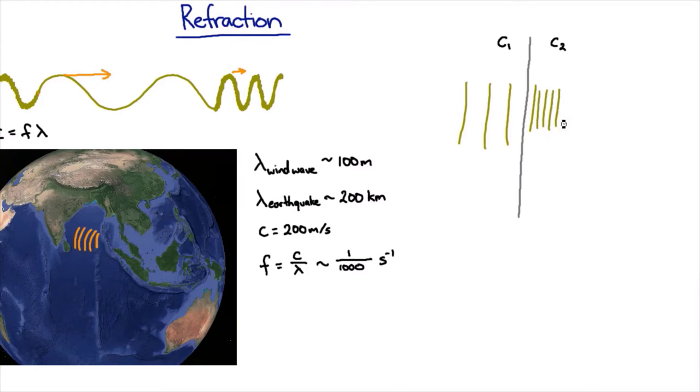But what happens if it comes in at an angle? Well, let's look at it. So remember, the wavelength over on this side has to be smaller, which means these crests have to be closer together.